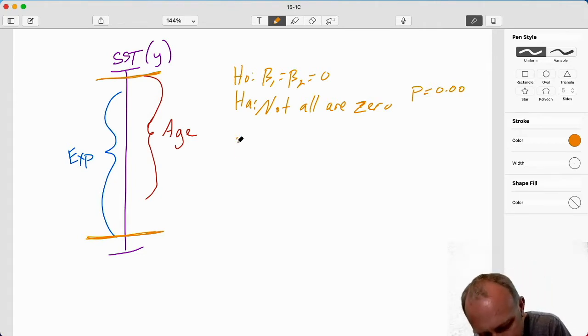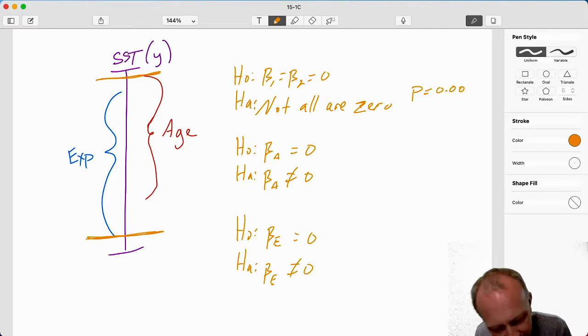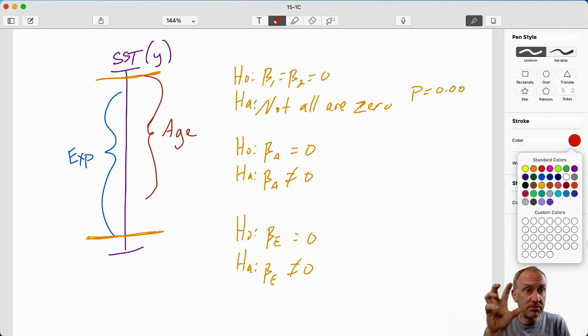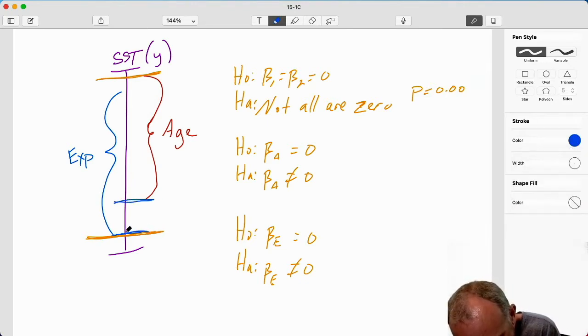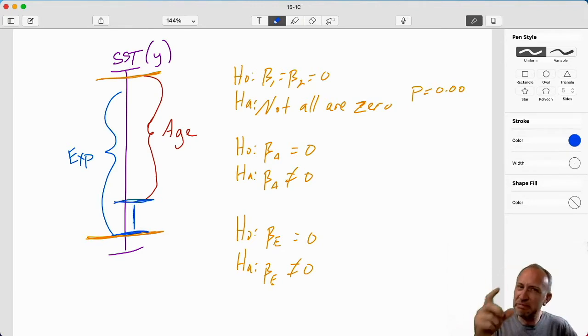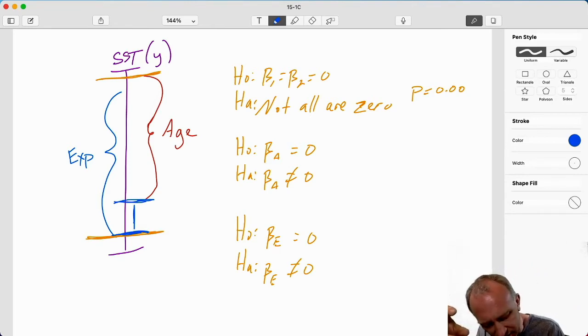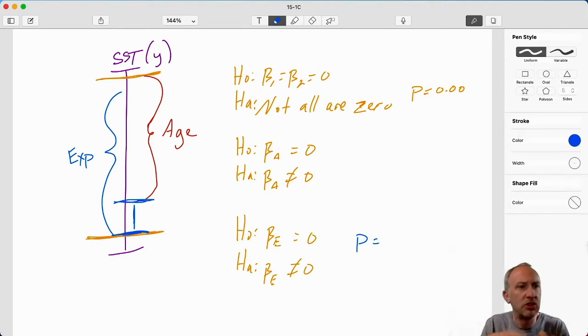So when we look at that F-test that is testing whether or not they are together significant, certainly in my little diagram, I can see, oh, absolutely together, age and experience, they're capturing a significant amount of SST. So that's why our p-value here is small. But then when we look at these individually, and I look at the coefficient on age, is it equal to zero, yes or no? And then I look at the test on experience, and I wonder, is it statistically different from zero, yes or no? Now we're looking at, given what age has to contribute, does experience contribute anything more? I would say it's a little bit, but it certainly is not very much.